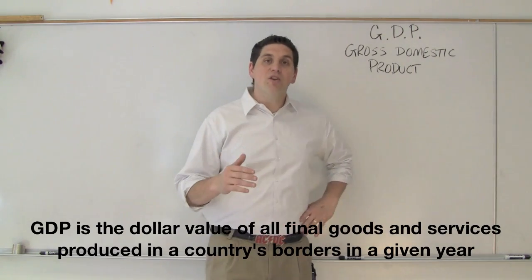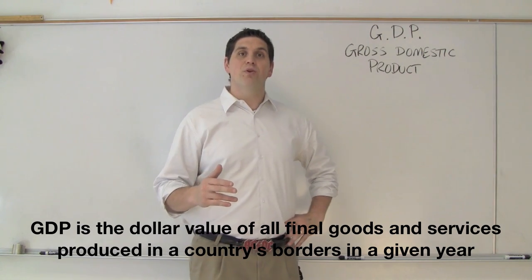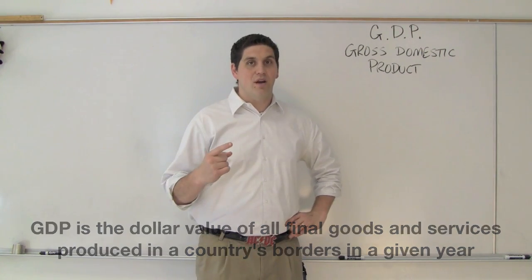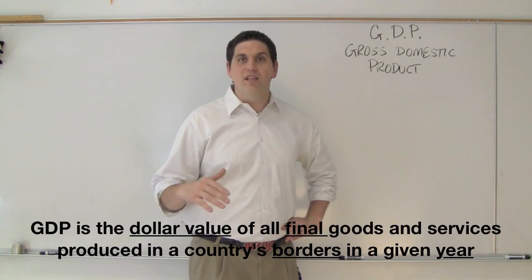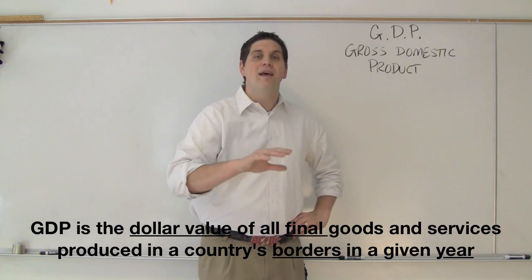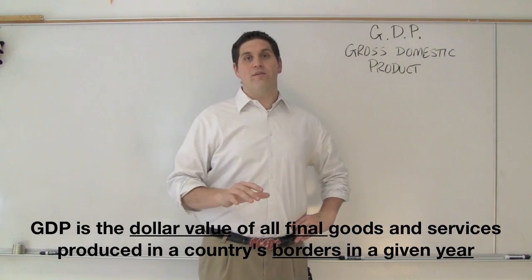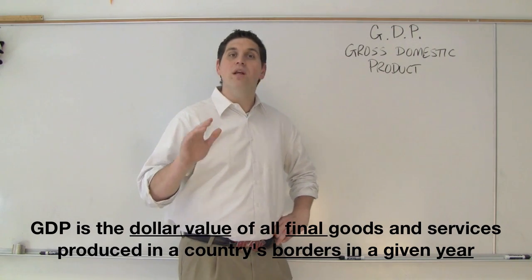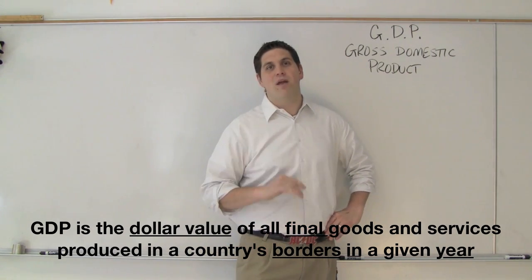Gross domestic product is the dollar value of all final goods and services produced in a country's borders in a given year. What? What was that? Dollar value. It's measured in dollars. It's not the number of stuff we made, the number of chickens and cars and houses. It's the dollar value of those things. Instead, it's final goods. We don't include something called intermediate goods. I'll explain in a minute.